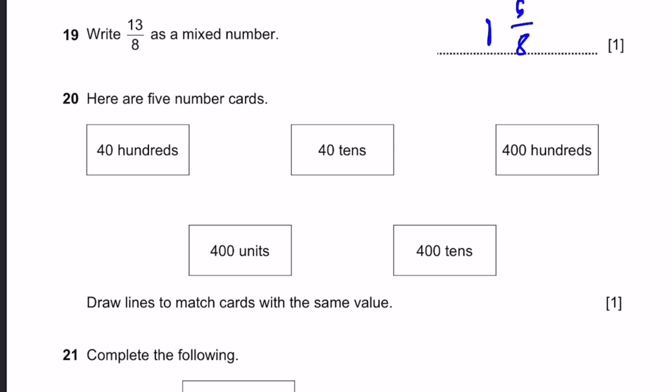Question 20. Here are five number cards. Draw lines to match cards with the same value. 40 hundreds. Let's write that in numbers, 4,000. 40 tens, 400. 400 hundreds, 40,000. 400 units, that's 400. 400 tens, 4,000. So you can match these two, and we can match these two. This one does not have a match. That's the answer.